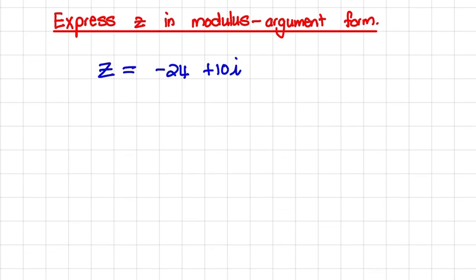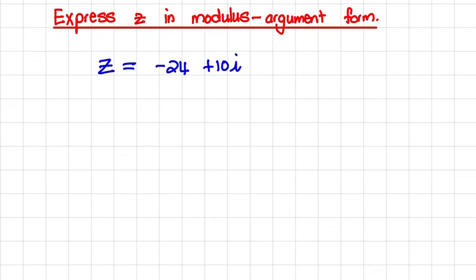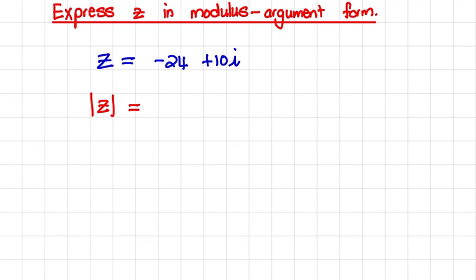What we want to do is find the modulus and the argument. To find the modulus, we take the square root of negative 24 squared plus 10 squared, which are the a and b values. When we simplify that, we get 26.